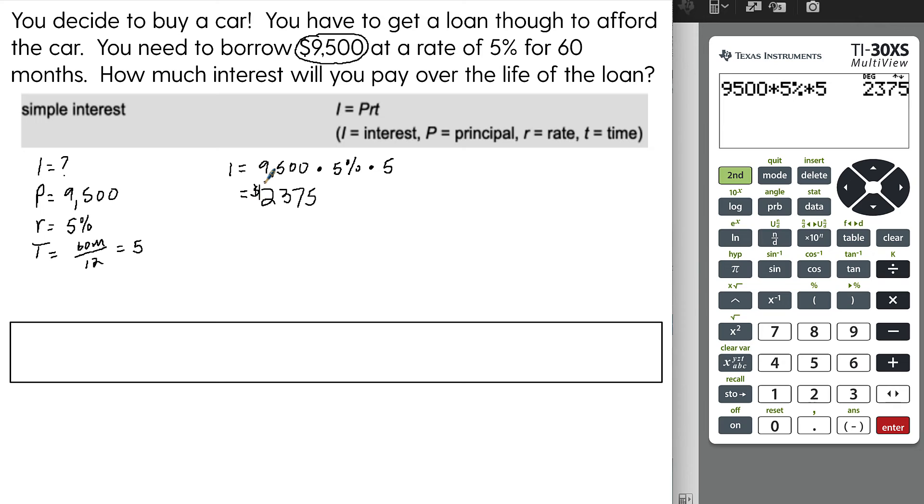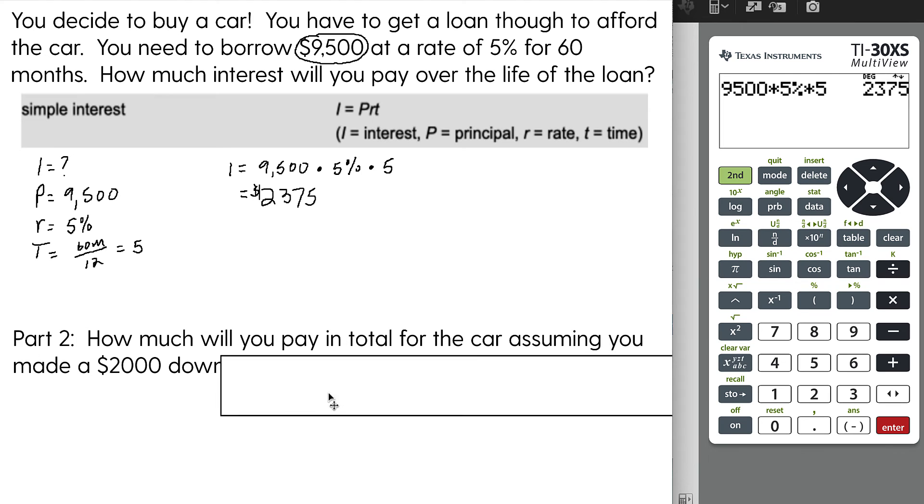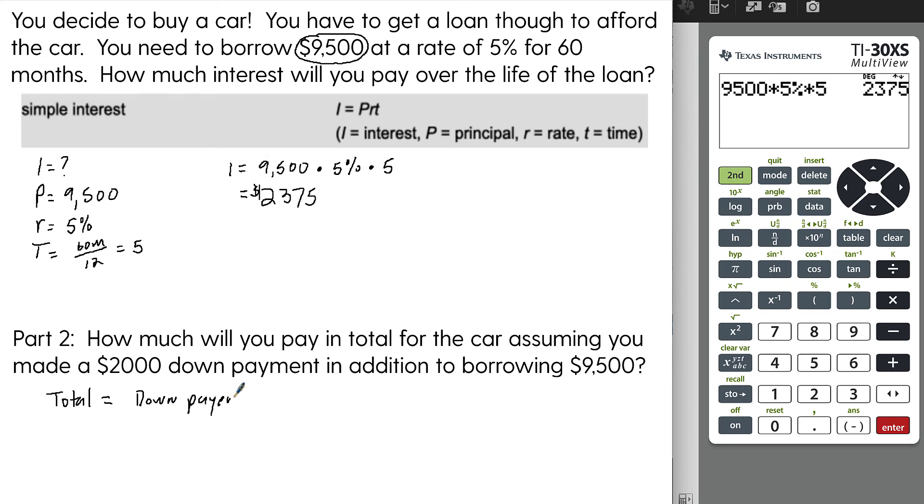Now, sometimes on the GED, they will actually ask you to go a step further where they might ask you something like this: How much will you pay in total for the car, assuming you made a $2,000 down payment in addition to borrowing $9,500? In order to answer this one, the total amount of the car is going to equal the down payment plus the interest plus your principal.